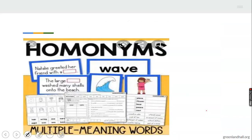Now look at this example. 'Natalie greeted a friend with a wave' — that is when you wave your hand. Then look at this other sentence: 'The large wave washed many shells onto the beach.' You see the word 'wave' appears in both sentences. So 'wave' means different things — same spelling, same pronunciation — one means to wave your hand, the other means the wave of the sea.